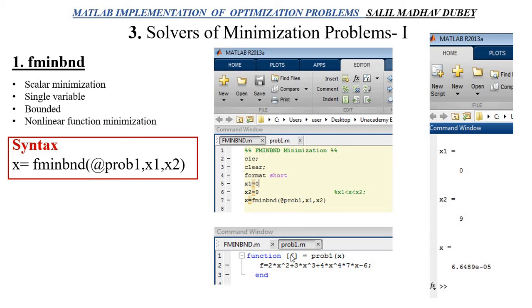Then x equals fminbnd at the rate prob1 dot x comma x1 comma x2. I have saved this in one file, and prob1.m I have another .m file in which I have function f equals prob1 x. I define f as my objective function which in this case is 2x^2 plus 3x^2 plus 4x^4 plus 7 times 7x minus 6. When I run it, the output value will display in my command window. You can see x1 and x2 values, and since it is a single variable function, the minimum value of x will be displayed here.